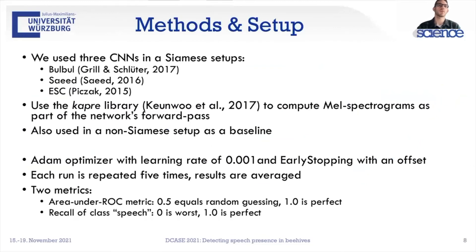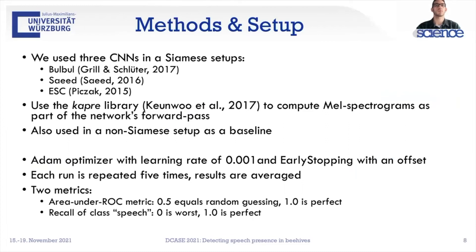As far as our methods are concerned, we used three CNNs in the Siamese setup, from three respective sources, and we also used the kapre library to compute mel spectrograms as part of the network's forward pass. This allows us to compute them on the GPU, which greatly speeds up computation. We also used each of these CNNs in the non-Siamese setup as our baseline. Further, we used the Adam optimizer with a given learning rate and also applied early stopping with an offset — the guaranteed number of update steps the training algorithm performs before early stopping begins.